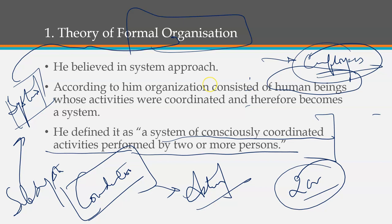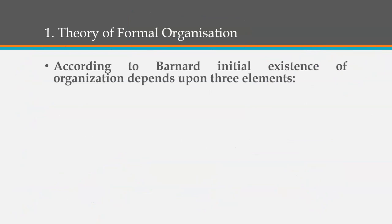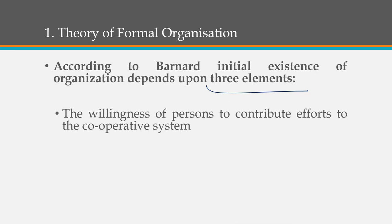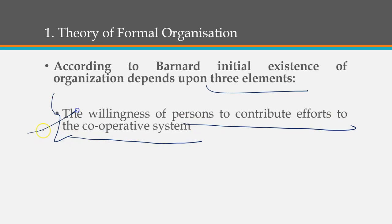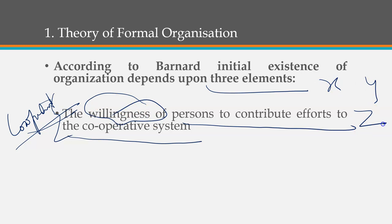Bernard's theory depends on three elements. The first element is the willingness of the person to contribute efforts and cooperate in the system. Cooperation is generated when all people are willing to cooperate. If there is no willingness among people — if person X, Y, and Z are not willing to contribute with each other — then the system approach cannot be followed.